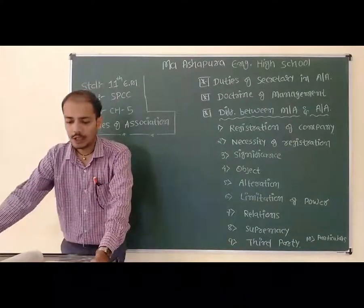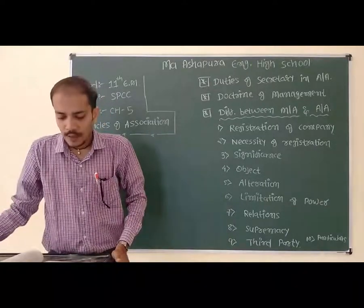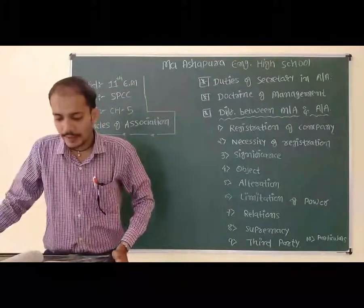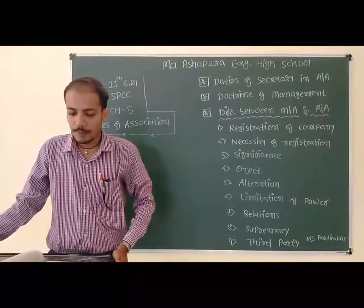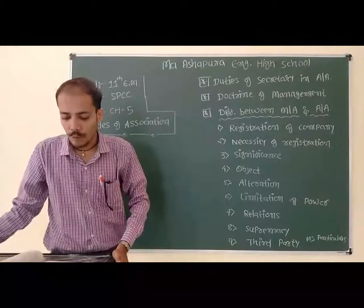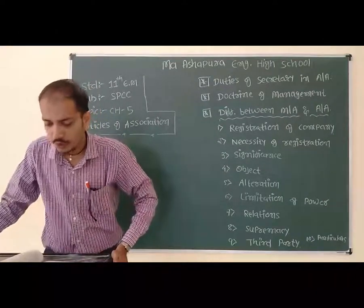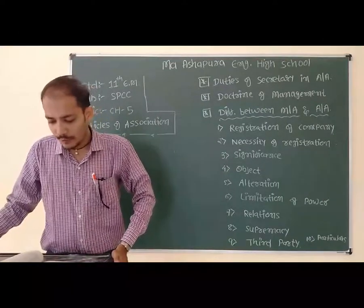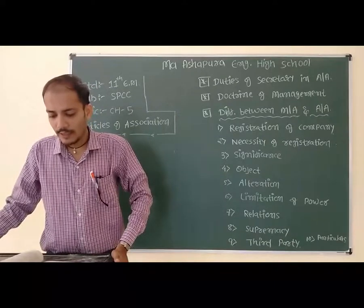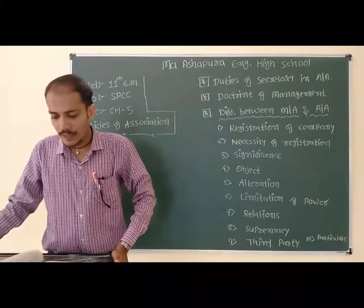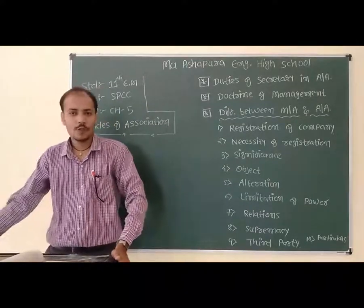First point: Registration of company. Memorandum of Association — compulsory. These documents are required for obtaining the certificate of registration. Articles of Association — registration of company is also compulsory. However, if a company does not prepare this document, it can adopt Table F to use it.